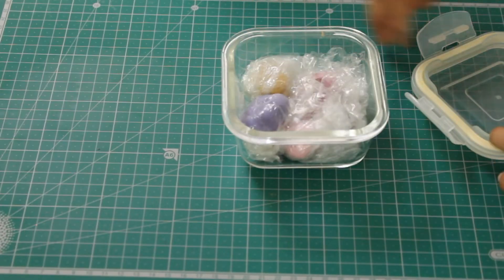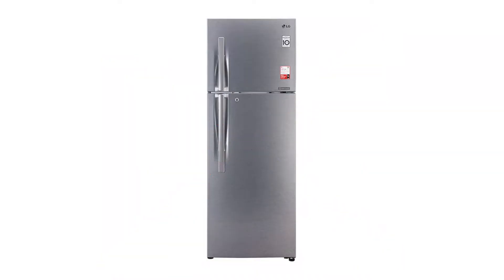Now take cling film and cling wrap the greased fondant and put it in an airtight container. Do not freeze or refrigerate. Just keep it at room temperature and it will last up to 12 months.